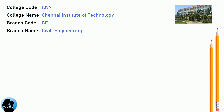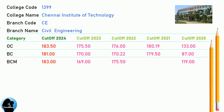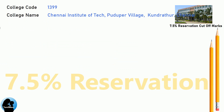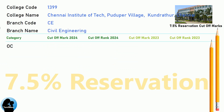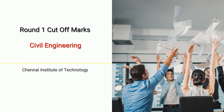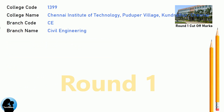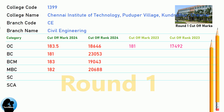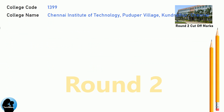DNA Cut-off for Chennai Institute of Technology in Civil Engineering. DNA 7.5 Reservation Cut-off for Chennai Institute of Technology in Civil Engineering. DNA Round 1 Cut-off and Round 2 Cut-off for Chennai Institute of Technology in Civil Engineering.